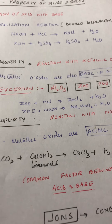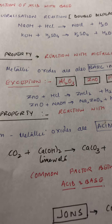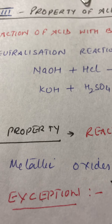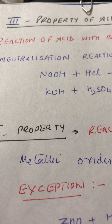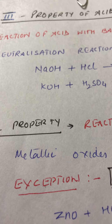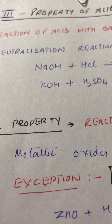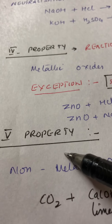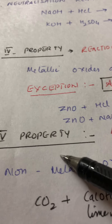We have now completed all five chemical properties of acids and bases. The first property showed how acids and bases react with metals — only acids react with metals. The second property was the reaction with carbonates and bicarbonates — again, only acids react, because carbonates and bicarbonates are basic in nature. These last three properties complete the chemical properties of acids and bases.